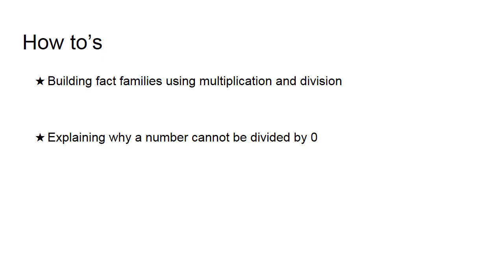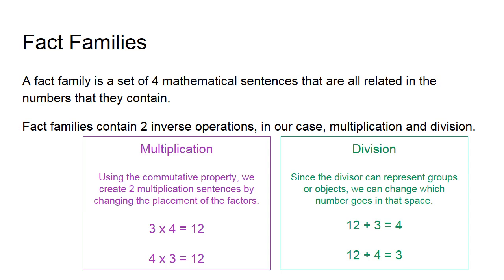So your how-tos for today are going to be building fact families with using multiplication and division and being able to explain why a number cannot be divided by zero. So let's begin with the fact family. A fact family is a set of four mathematical sentences that are all related in the numbers that they contain. Fact families contain two inverse operations, and in our case, it's going to be multiplication and division.